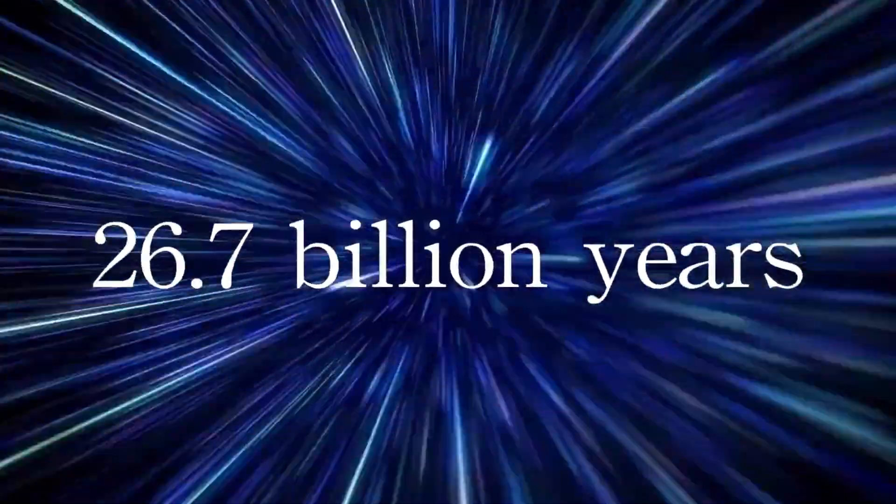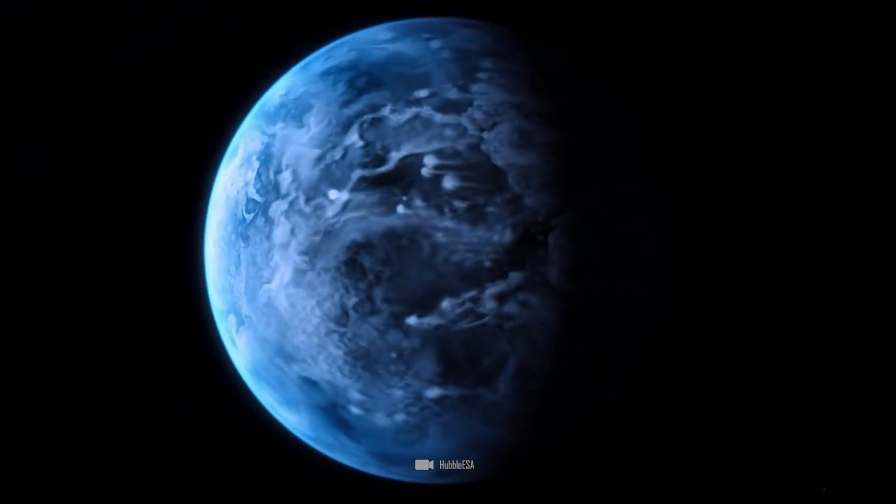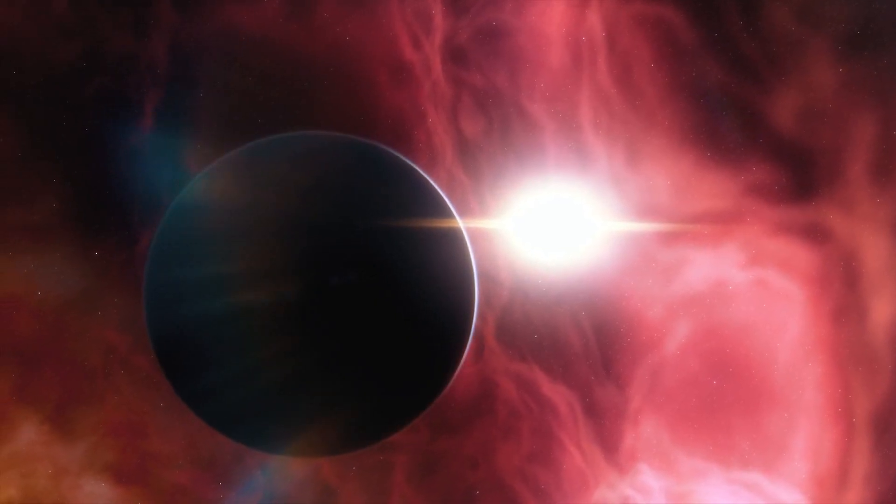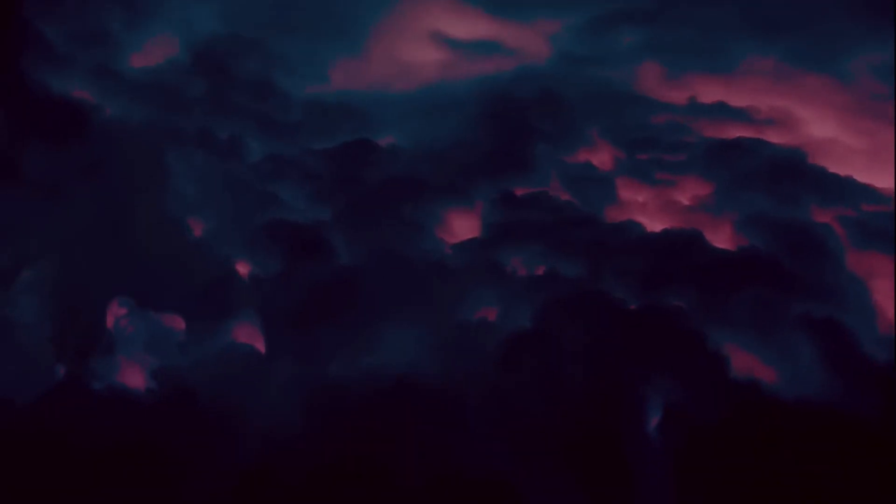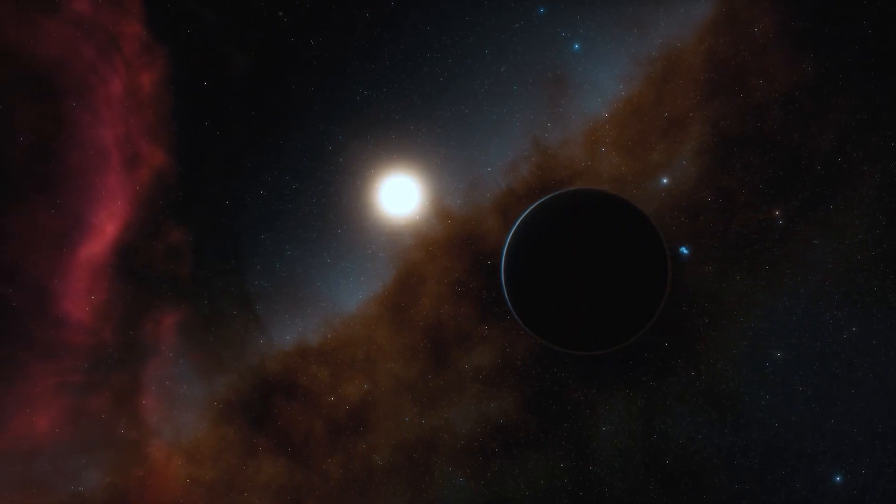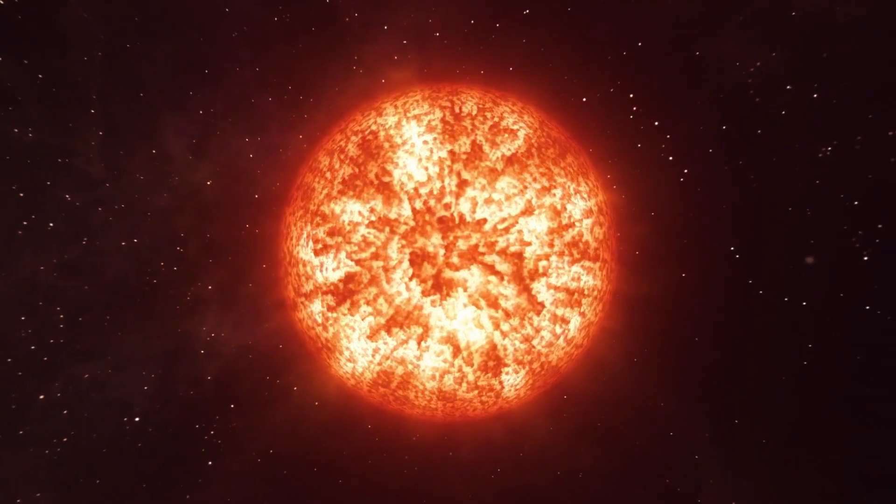This exoplanet was discovered in 2005 and is located around 64.5 light-years away from Earth in the constellation of Volpecula. This exoplanet is therefore very close and is virtually one of our closest cosmic neighbors. However, this planet orbits its star, HD189733, very closely and is significantly larger than our Earth or K218b.